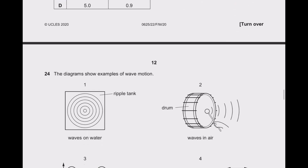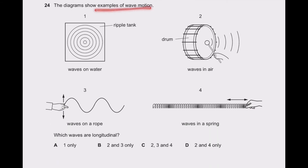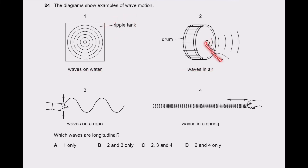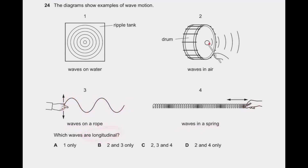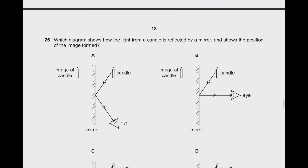Question 24: examples of wave motion include waves on water in a ripple tank, waves in air when a drum is beaten, waves on a rope, and waves in a spring. Longitudinal waves have vibration in the direction of motion of the wave. Sound has compression and rarefaction — so beating the drum and waves in a spring are longitudinal. Second and fourth are longitudinal wave examples; the rest are transverse. Answer D is correct.